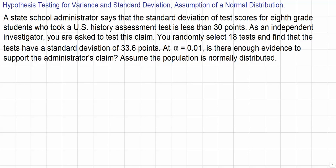A state school administrator says that the standard deviation of test scores for 8th grade students who took a U.S. history assessment test is less than 30 points. As an independent investigator, you are asked to test this claim. You randomly select 18 tests and find that the students have a standard deviation of 33.6 points. At alpha equals 0.01, is there enough evidence to support the administrator's claim? Assume the population is normally distributed.